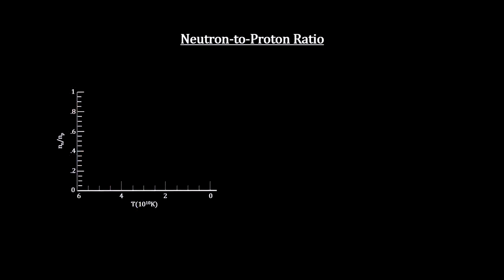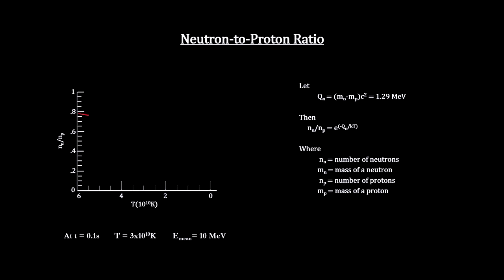Given the mass difference between neutrons and protons, we can calculate the expected ratio of neutrons to protons for any given temperature. Note that the number of neutrons decreases exponentially as the temperature cools.